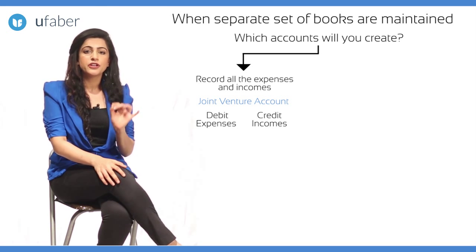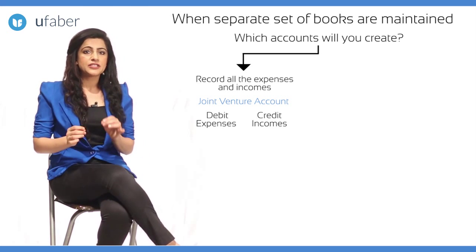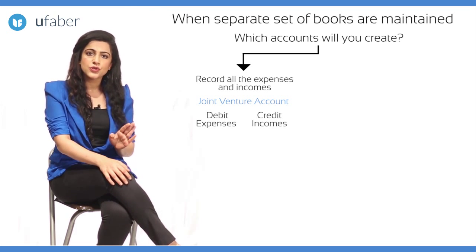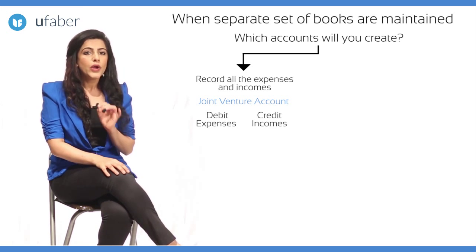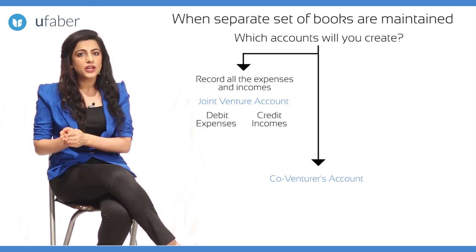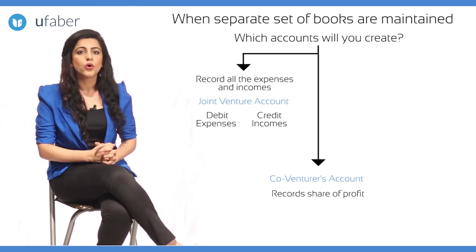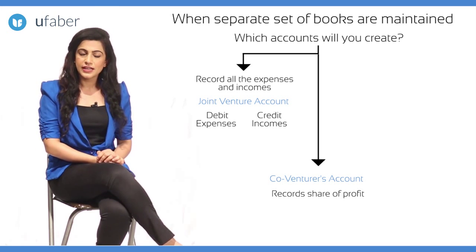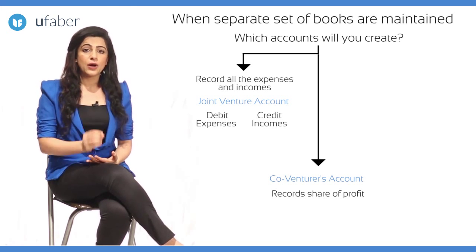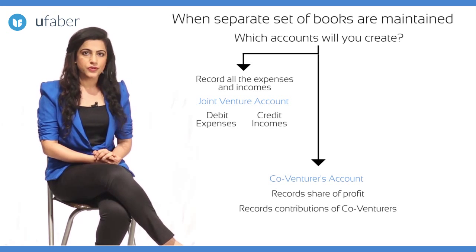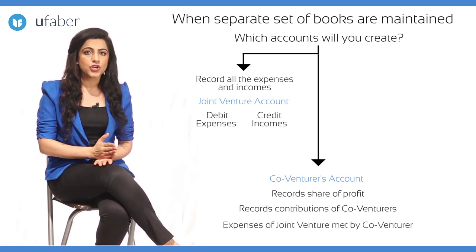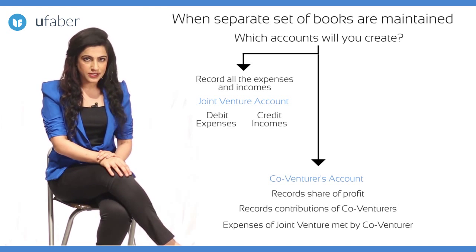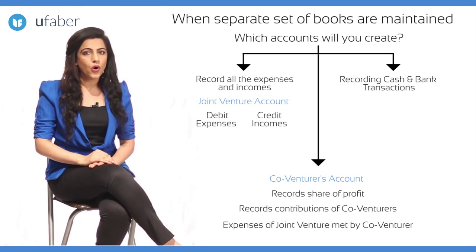How do we transfer the profit to X and Y? In partnership, we have partner's capital account for transactions between the partnership and partners. The joint venture requires such an account for transactions of the joint venture with its co-venturers, so here we open co-venturer's account. The profit will be transferred to X's account and Y's account depending on the agreed ratio. This co-venturer's account will also record the amount of cash, goods brought in or withdrawn by the co-venturer, as well as joint venture expenditure met directly by the co-venturer.